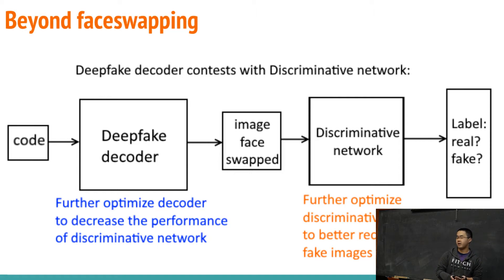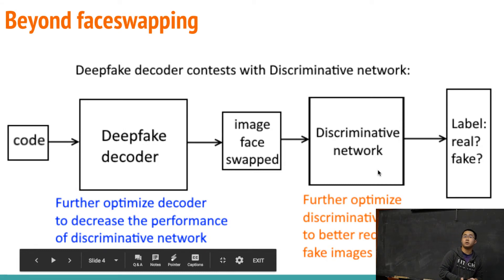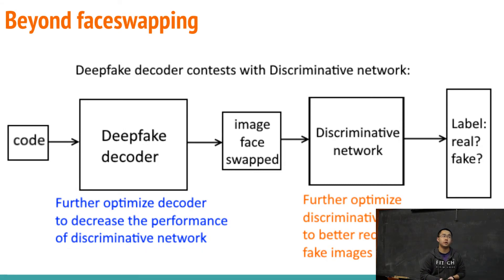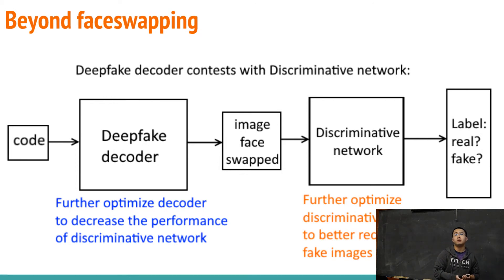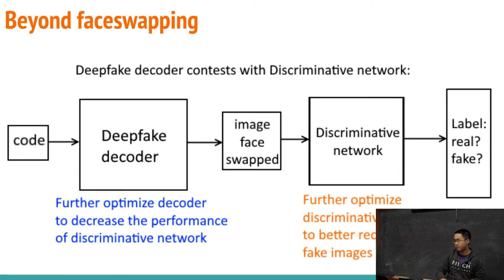We intend to improve on that by introducing a second discriminative network that, when given an image, can tell if it's fake or genuine. We wish to explore the possibility of forming a generative adversarial network in which the deepfake network, which generates fake images, competes with the discriminative network, which tries to tell if a picture is fake.